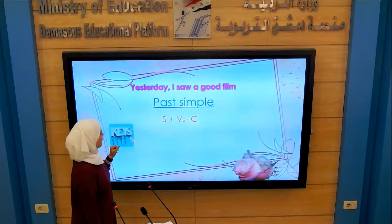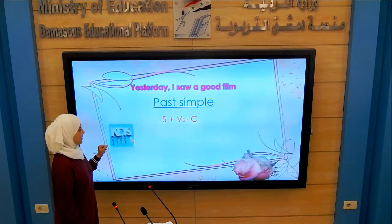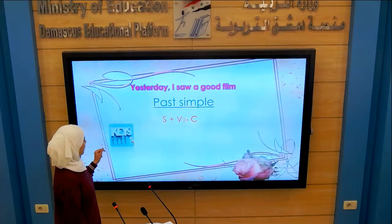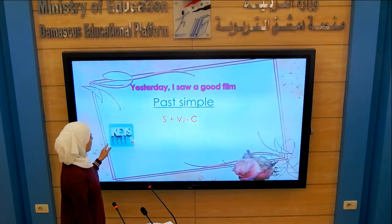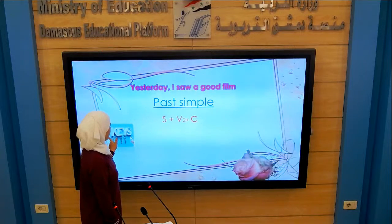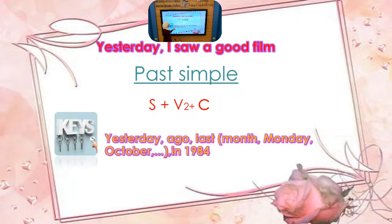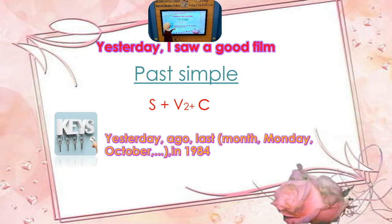What are the keys of Past Simple? What are the adverbs of this tense? We have 'yesterday', 'ago', 'last month', 'last Monday', 'last October', or 'in 1984' — a past date. Or maybe you can use a past event, for example the ancient pyramids.